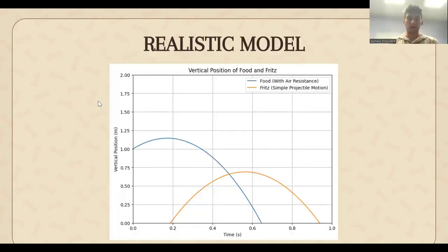For the realistic model, it shows the change in vertical position of Fritz and the food with respect to time. From this model, we can use the position equations of projectile motion to infer the horizontal position at which Fritz and the food cross-path vertically. In this model, we see that Fritz spends very little time in close proximity to the food. This means he has very little time to catch the food, which explains his low success rate.